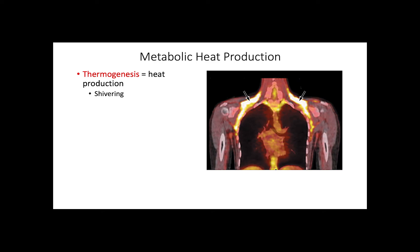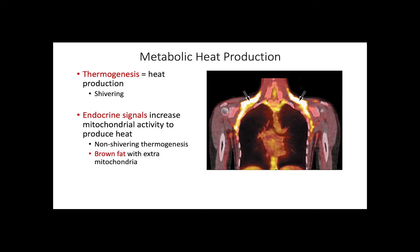Animals in cold environments need to maintain or obtain heat. In mammals and some birds, heat is produced by different processes such as shivering. The production of heat is called thermogenesis. Another way heat is produced is by endocrine signals that increase mitochondrial activity — mitochondria switch from producing ATP to producing heat. This is known as non-shivering thermogenesis. In body parts where mitochondria are abundant, we can find brown fat, such as the areas shown in yellow on the PET scan.